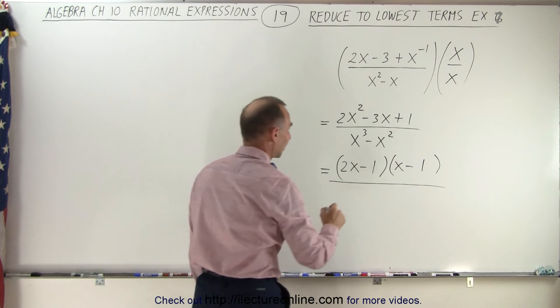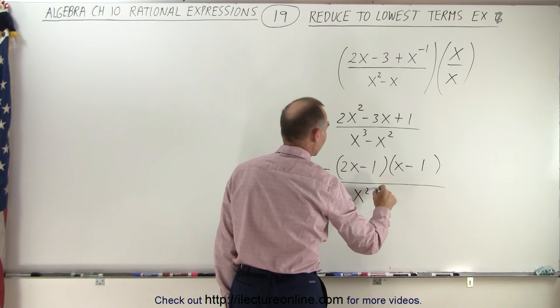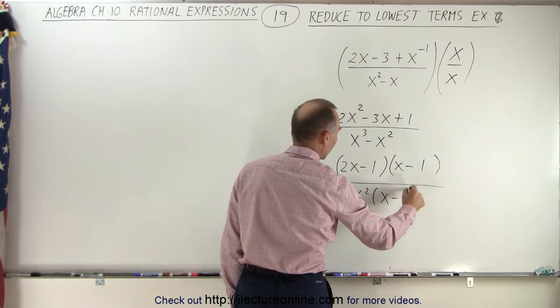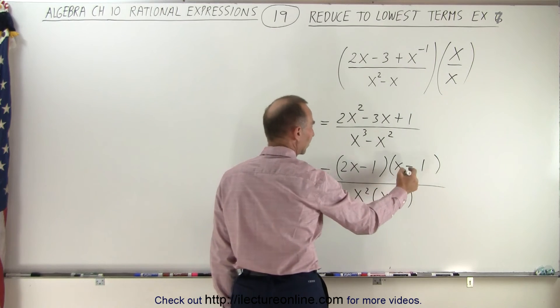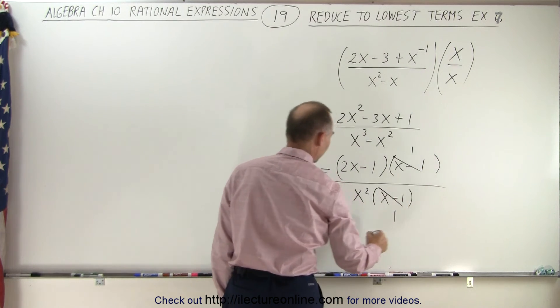In the denominator, let's factor out an x squared, which leaves us with x minus 1. And then we realize that we have an x minus 1 here and an x minus 1 here. That cancels out.